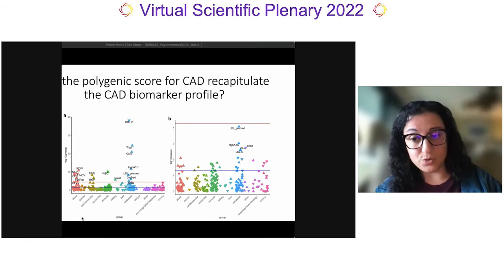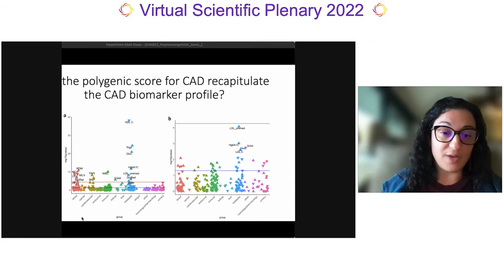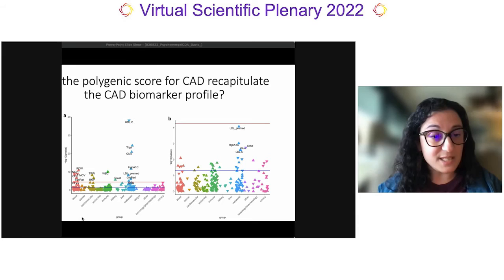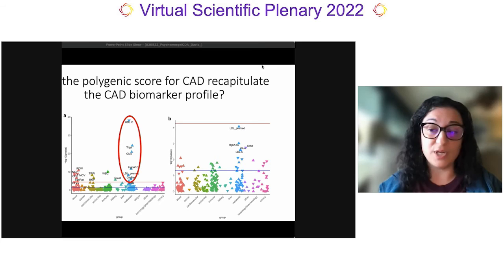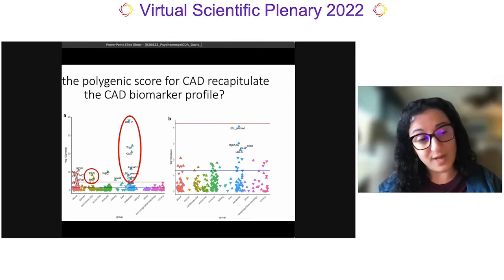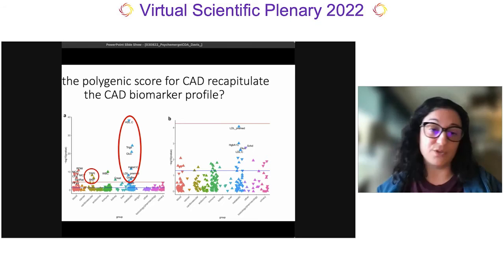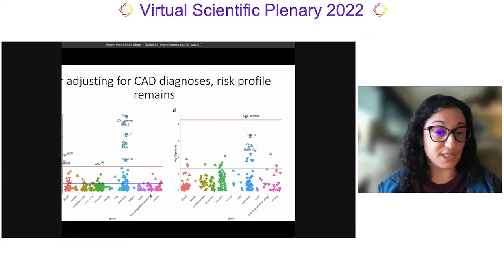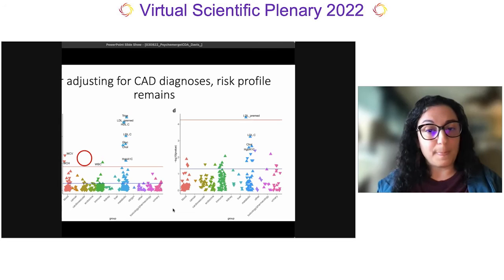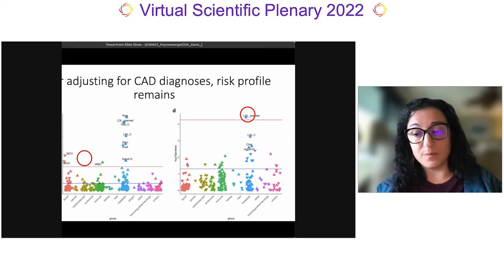The analysis was performed in about 70,000 individuals of primarily European ancestry and in a sample of about 15,000 individuals of primarily African ancestry. We observed associations with several canonical biomarkers including known risk factors like LDL, triglycerides, and lower HDL, but also markers of heart damage like troponin and BNP, which are elevated after a cardiac event. We then co-varied for the presence of a CAD diagnosis — we retain the risk profile for CAD but lose those markers of CAD events, and some of our risk biomarkers become even more significantly associated.